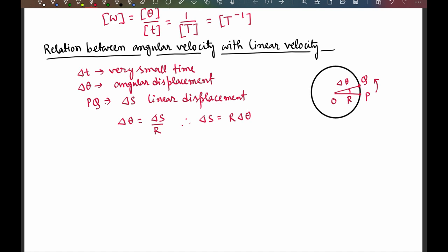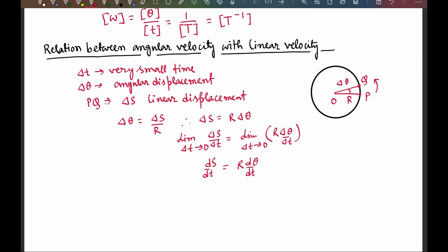As time del T is very small, we can write that limit as del T tends to zero of del S by del T equals limit as del T tends to zero of R del theta by del T. This equals dS/dt, and here R times d theta/dt. We know that dS/dt is linear velocity V, and d theta/dt is angular velocity omega. Therefore, V equals R omega. As velocity is a vector quantity, we can write V equals R cross omega.